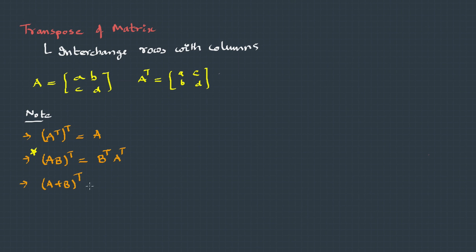If we take the transpose of A plus B, this equals A^T plus B^T. The validity of these properties can be tested with a numerical example.